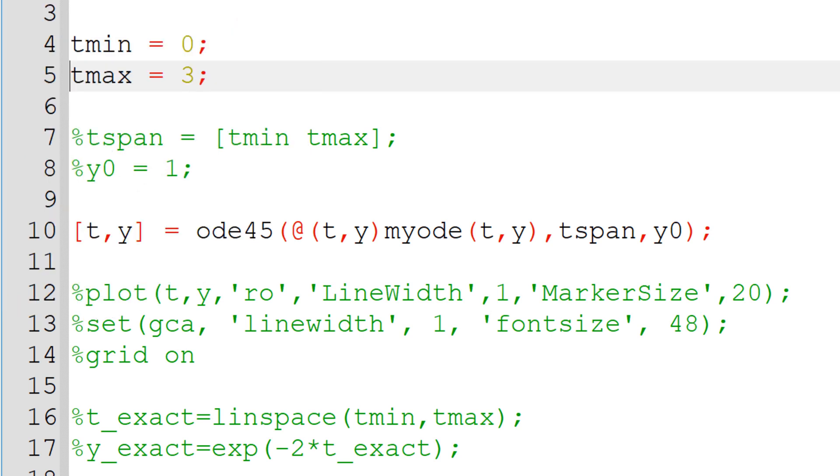To fit them into a single variable tspan, I used tmin and tmax with a square bracket. Lastly, you need to define the initial condition y0. In this case, y0 equals 1.